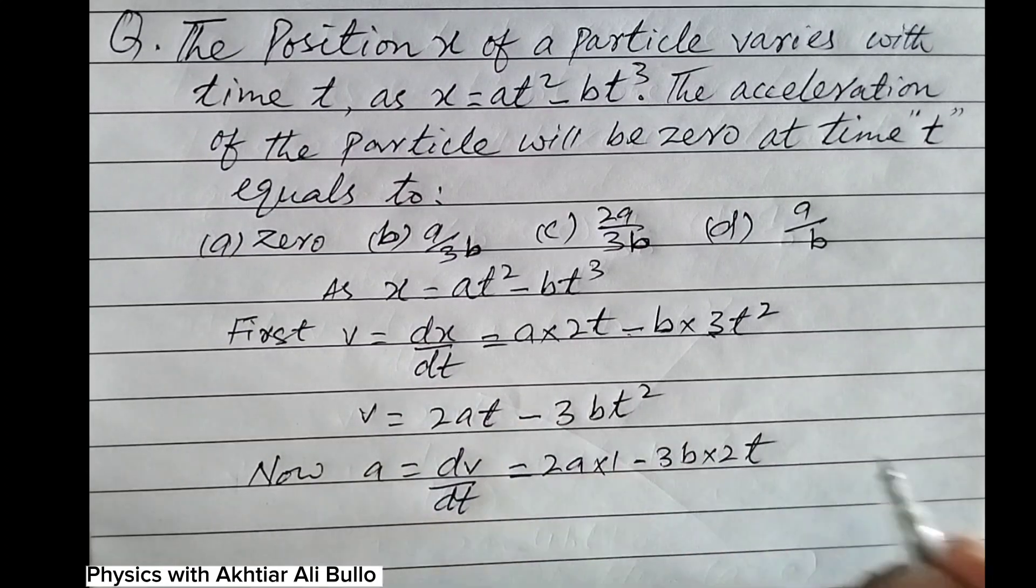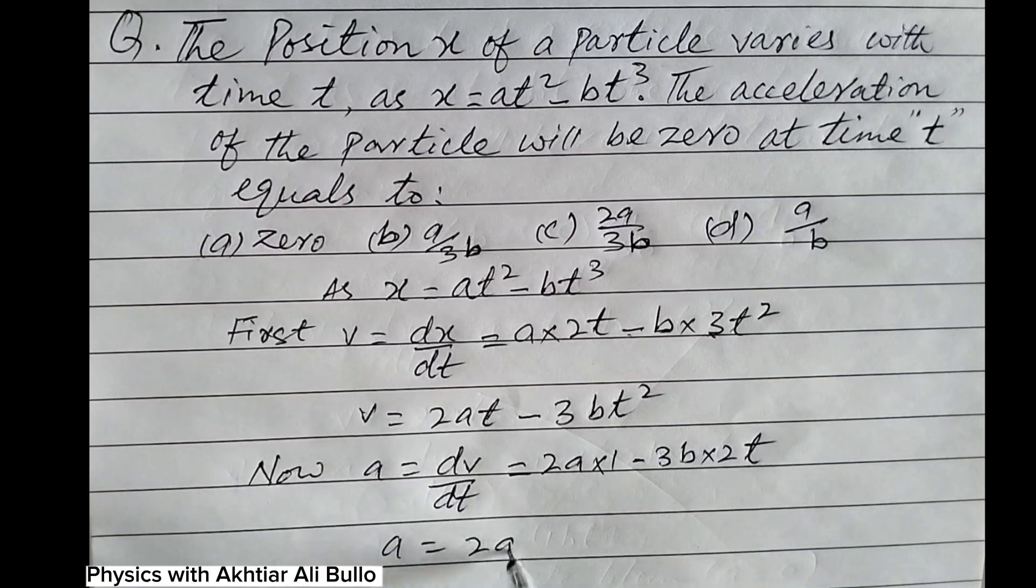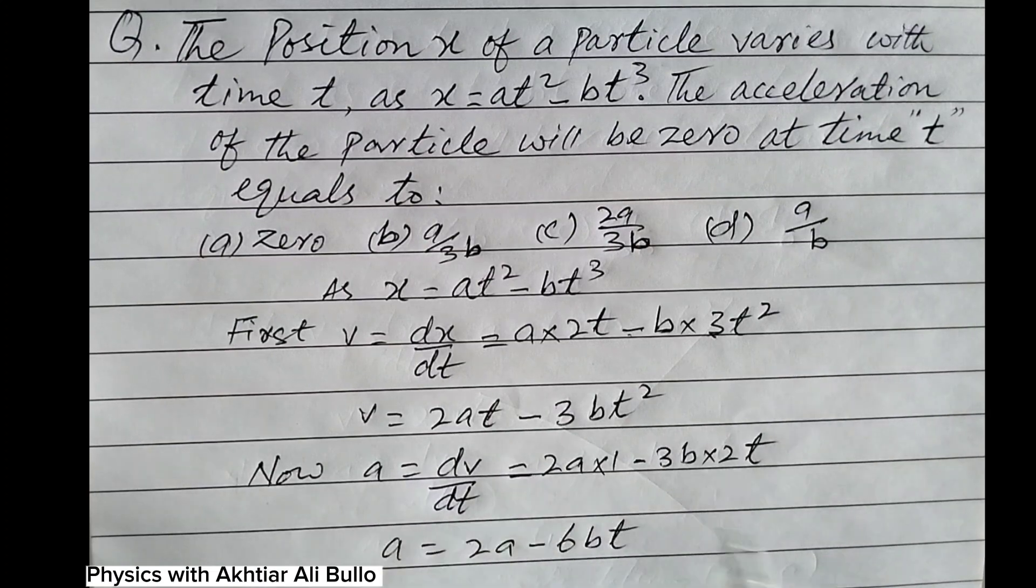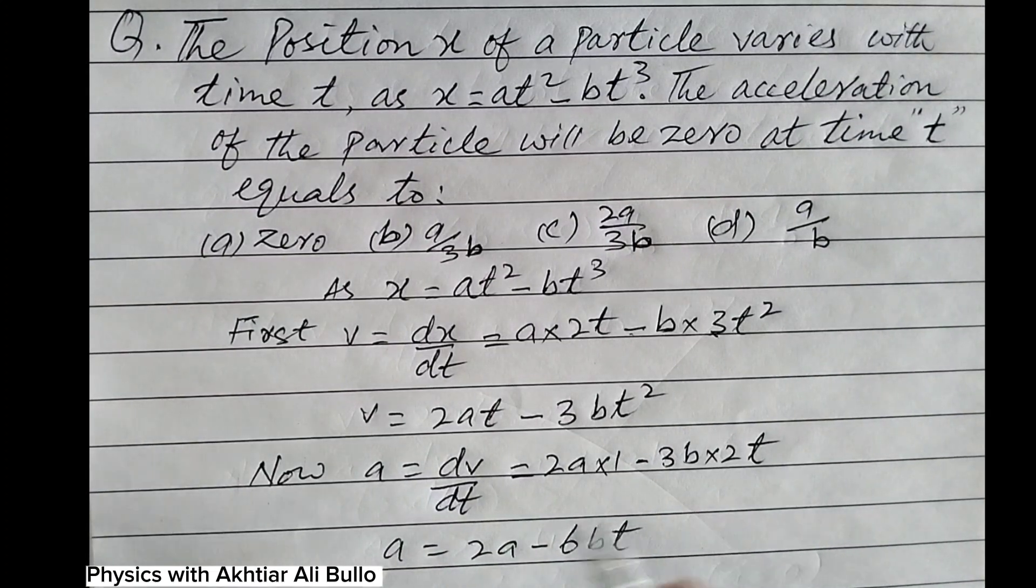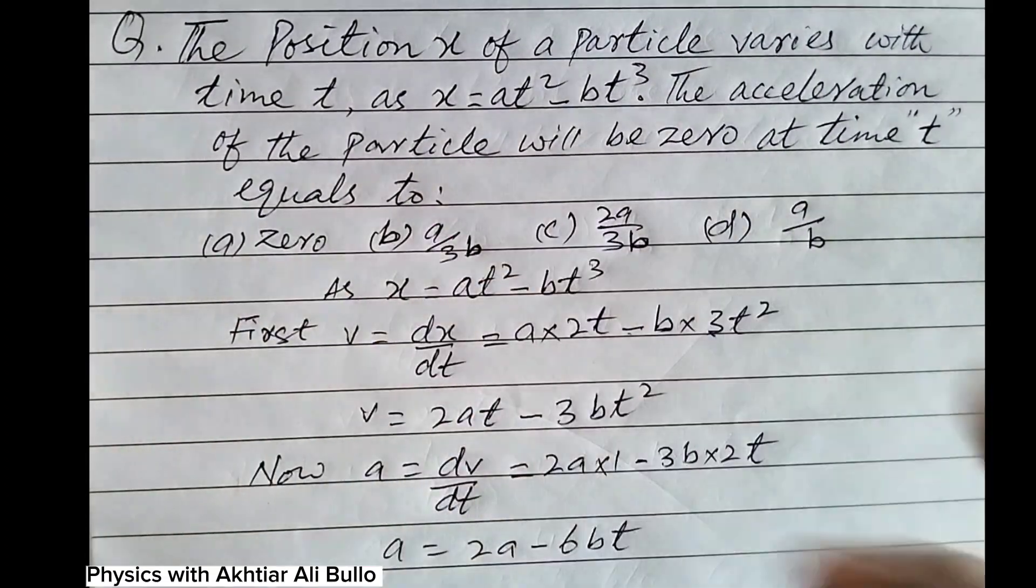So a = 2a - 6bt. According to the condition, the acceleration of the particle will be zero.